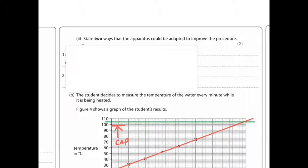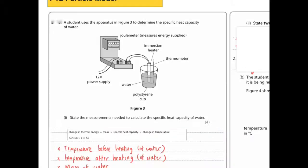State two ways that the apparatus could be adapted to improve the procedure. So these kind of improvement questions are becoming really popular in the new specs, so I expect a lot more of these. I think they always give you these kind of simplistic setups with deliberate loopholes or flaws which you have to spot.